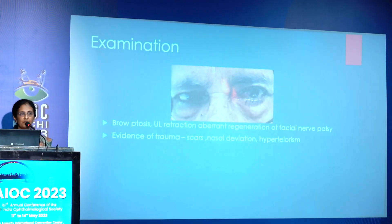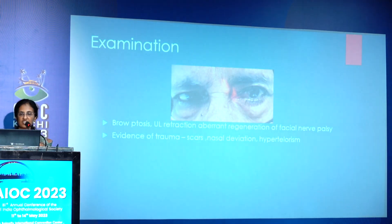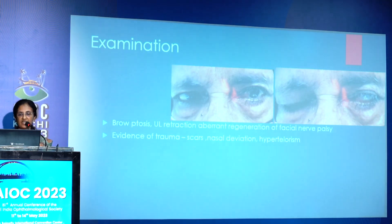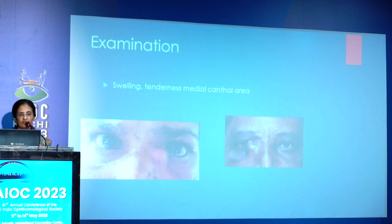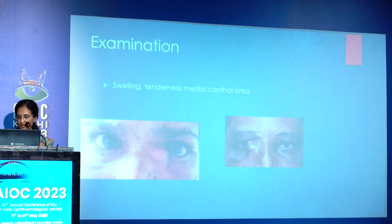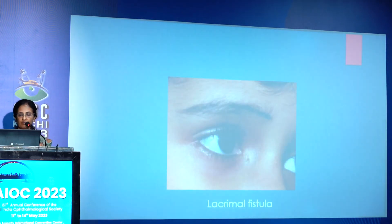Past history: ask about congenital stenosis, history of probing, trauma, surgeries, medications including glaucoma medications, topical chemotherapeutic agents, systemic diseases, and radiotherapy for periocular malignancies. On examination, most of us will not miss common conditions, but there are some rare things to note. This patient came with a history of watering and there is mild upper lid retraction in his left eye. When asked to close his eye, he had a long-standing facial nerve palsy. Look for evidence of trauma like scars, nasal deviation, and hypertelorism. Swelling at the medial canthal area: if below the insertion of the medial canthal tendon it is from the sac — in the first case a lacrimal abscess, and in the second a sac tumor.